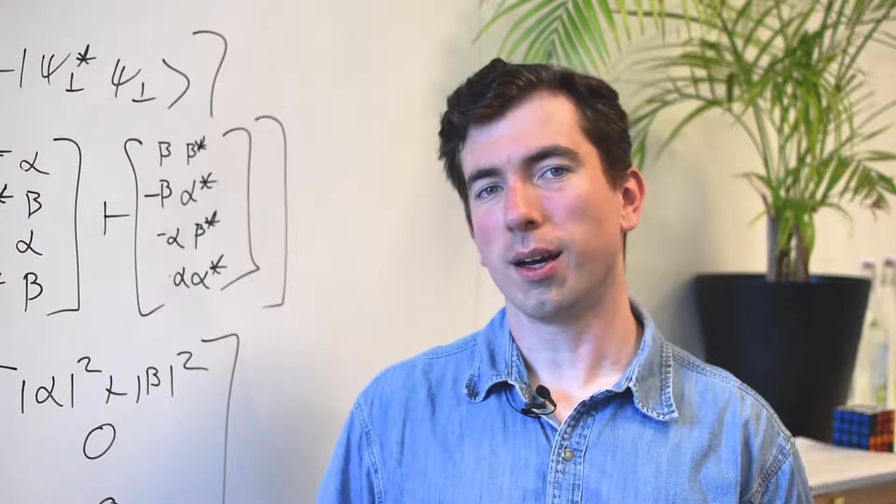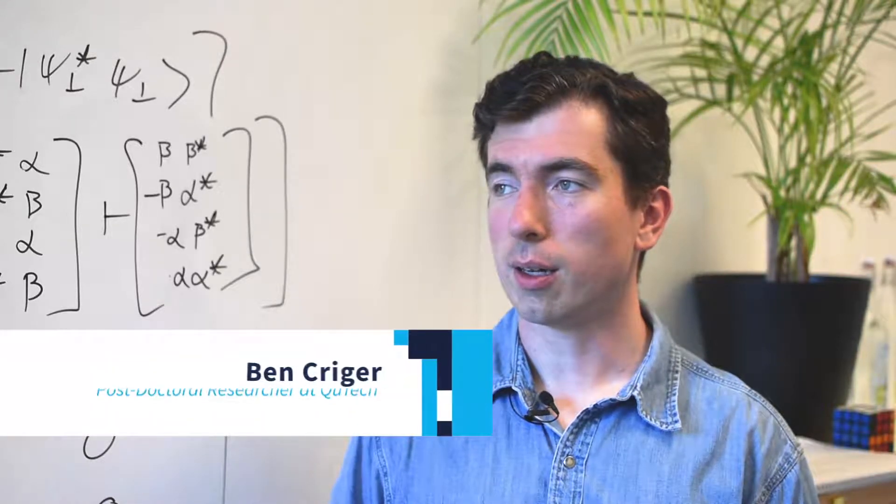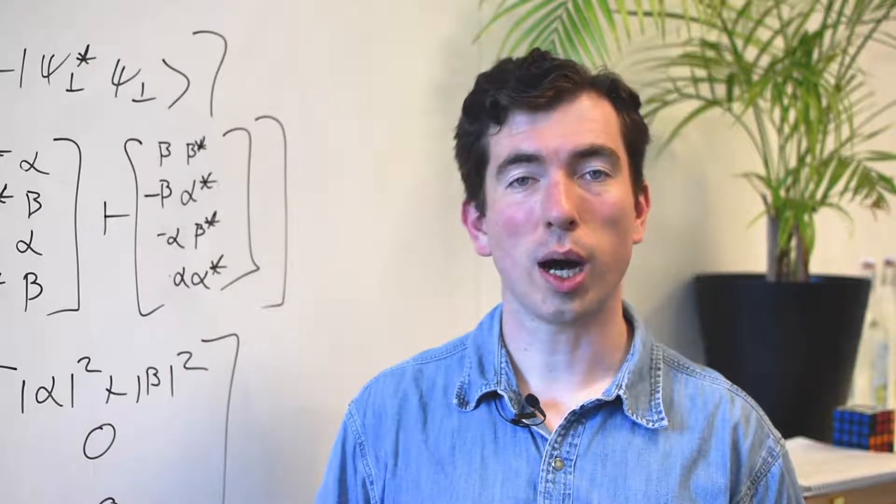Often when doing quantum information, ket notation can fail you. This happens a lot when you have a densely packed vector full of a bunch of different coefficients, and there's no obvious structure.